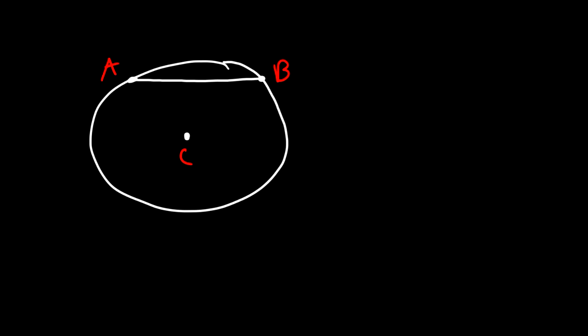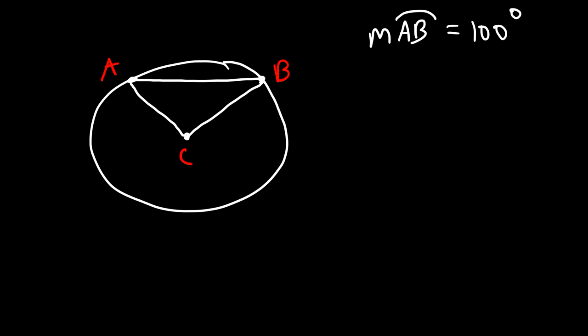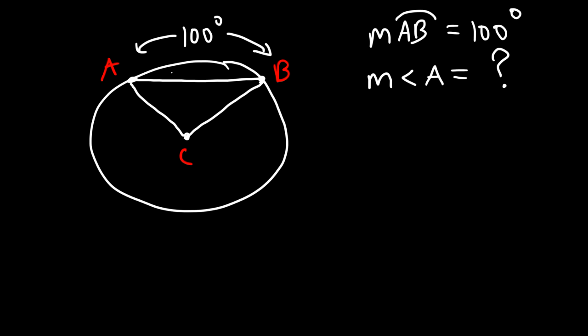Let's work on a problem. We have a circle with center C, a chord between points A and B, and the measure of arc AB is 100 degrees. What is the measure of angle A? Since the intercepted arc and the central angle have the same measure, angle ACB is also 100 degrees.